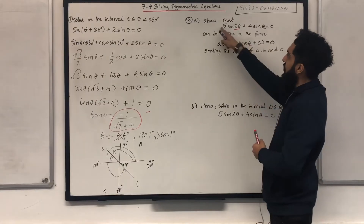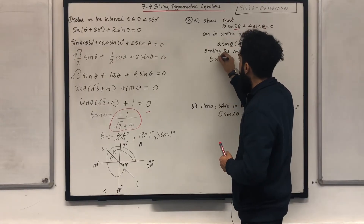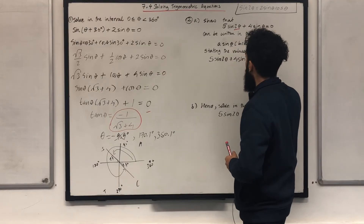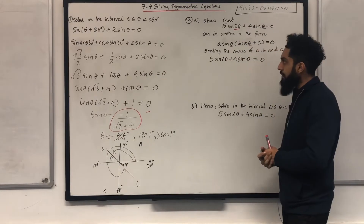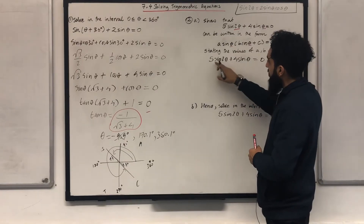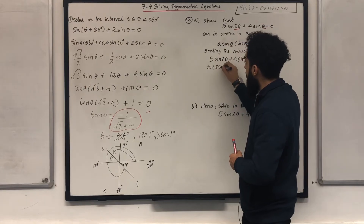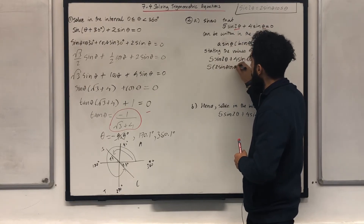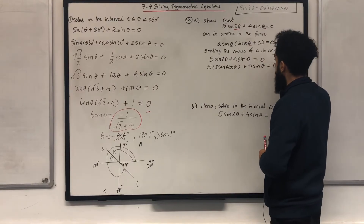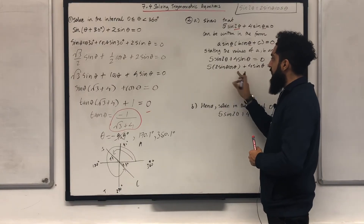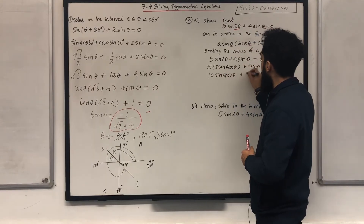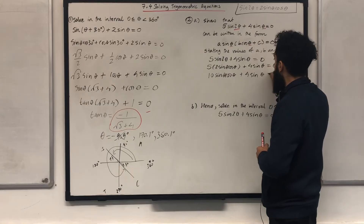My first step is to write 5 sine 2 theta plus 4 sine theta equal to 0. Then I replace sine 2 theta with 2 sine theta cos theta, giving 5 times 2 sine theta cos theta plus 4 sine theta equal to 0. Expanding this, I get 10 sine theta cos theta plus 4 sine theta equal to 0.